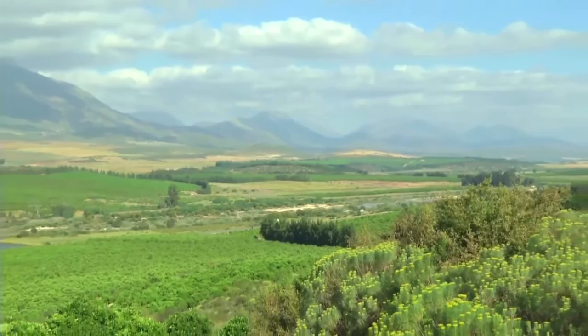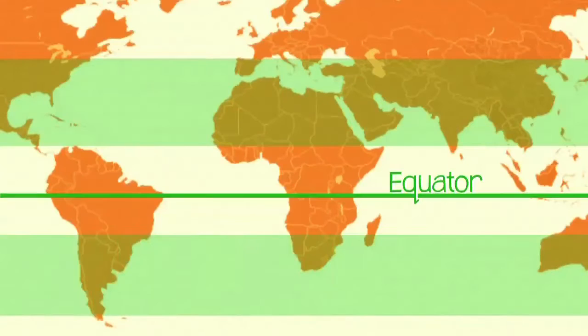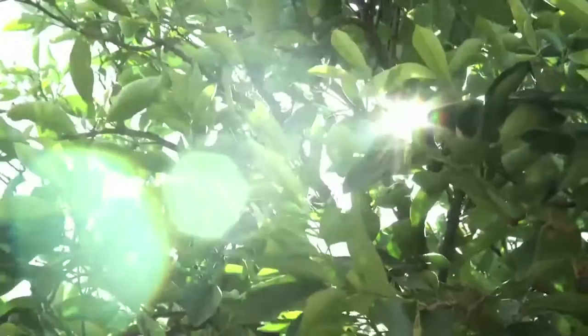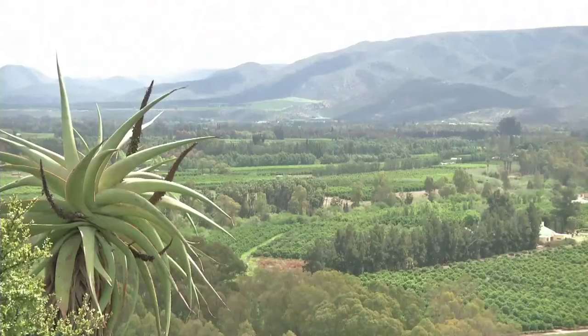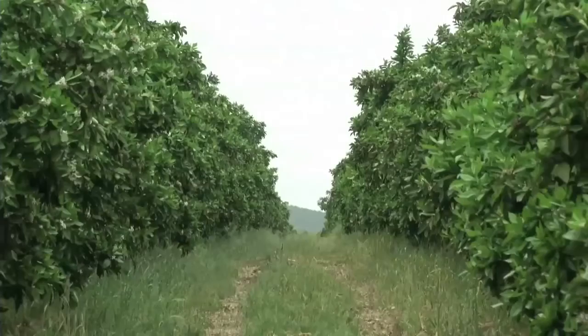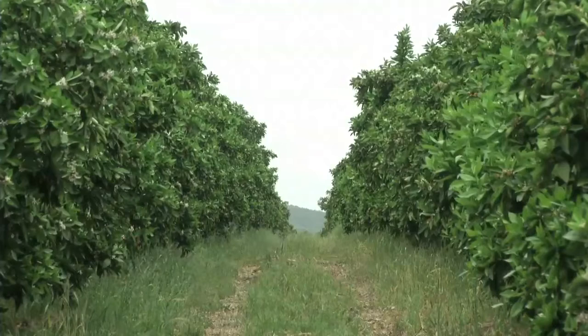Worldwide, citrus is produced almost exclusively in the band between 20 and 40 degrees north and south of the equator, better known as subtropical regions. Summers must be hot enough for fruit to grow sweet and winters must be cold enough for the fruit to develop colour. In South Africa, commercial citrus production is confined to areas with hot, reasonably humid summers, mild and almost frost-free winters where temperatures seldom drop below minus 2 degrees Celsius, and with high enough rainfall and not too much hail and wind.